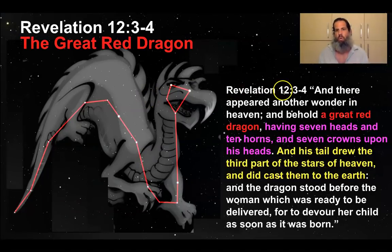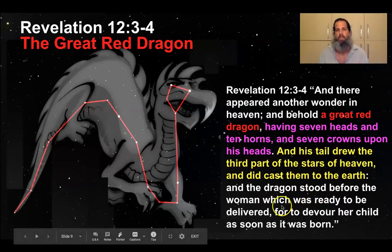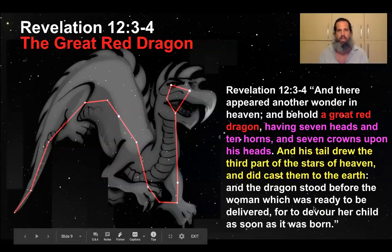Revelation 12, verse 3 to 4: And there appeared another wonder in heaven, and behold, a great red dragon, having seven heads and ten horns, and seven crowns upon his heads. And his tail drew the third part of the stars of heaven and did cast them to the earth. And the dragon stood before the woman which was ready to be delivered, to devour her child as soon as it was born.